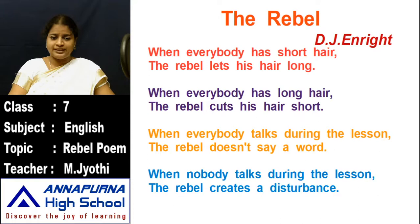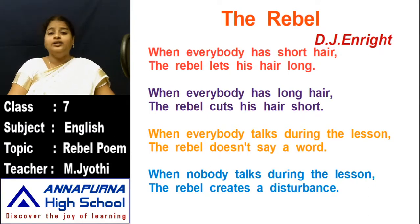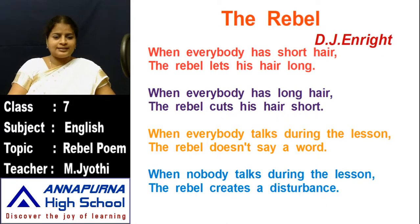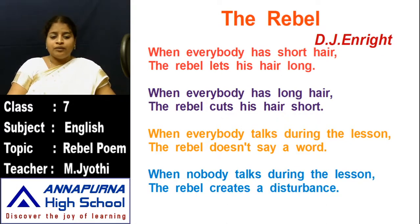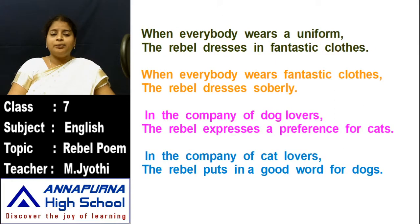Once again I am reading this: When everybody has short hair, the rebel lets his hair long. When everybody has long hair, the rebel cuts his hair short. When everybody talks during the lesson, the rebel doesn't say a word. When nobody talks during the lesson, the rebel creates a disturbance.